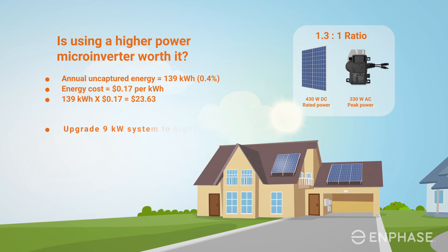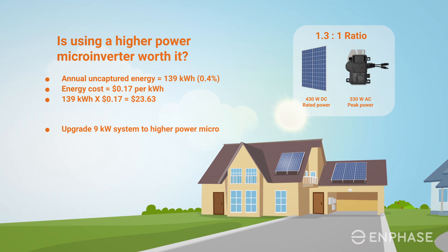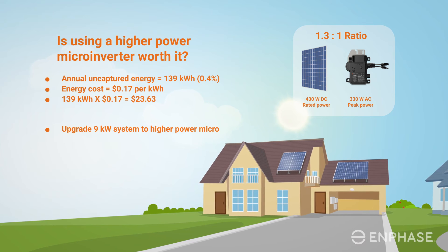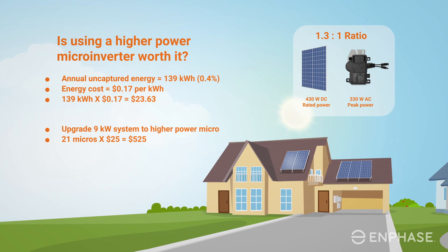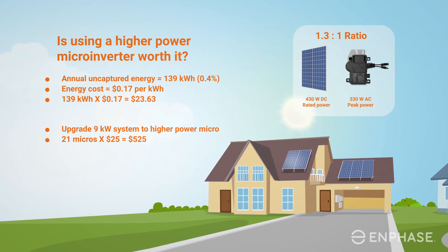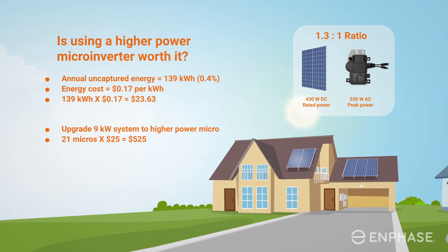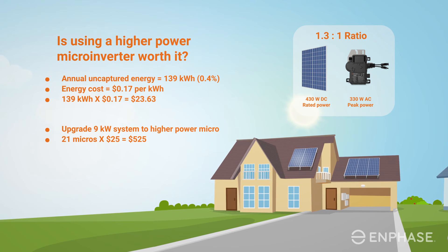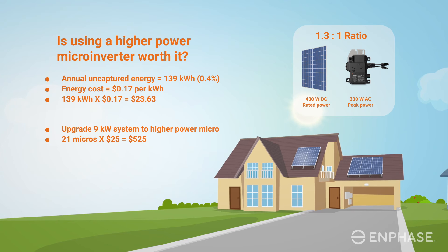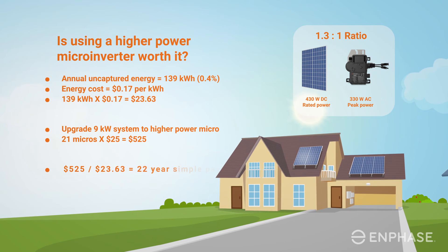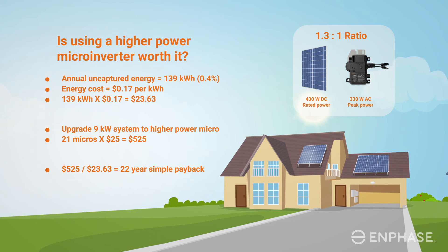Now let's calculate the cost of using a higher powered microinverter to see if it would be worth it in order to capture 100% of the potential energy production. The total value of the uncaptured energy is $23.63 in the first year. At a price difference of $25 for each micro, the total additional cost is $525. Dividing $525 by $23.63 tells us that it would take about 22 years to pay for itself.